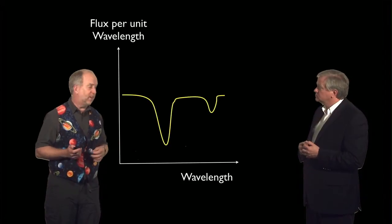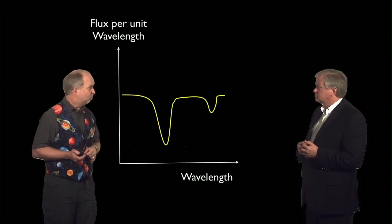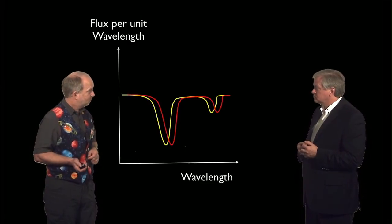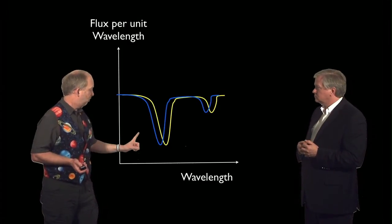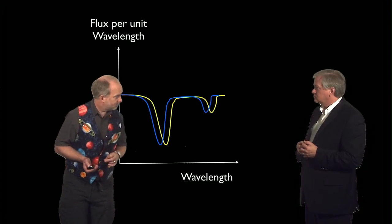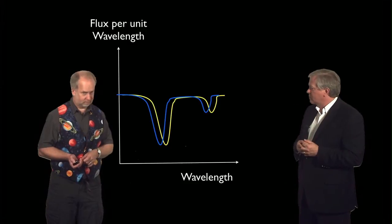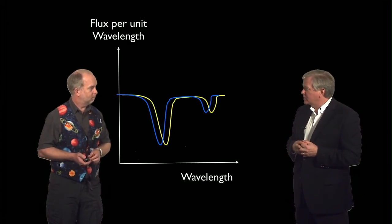For example, if that's the normal spectrum of the star with absorption lines, when it's moving away from us that might get shifted over to here. When it's moving towards us, it might get shifted the other way. So what you might look for is small shifts in the absorption line wavelengths. That's two interesting ways we can imagine finding a planet going around a nearby star.